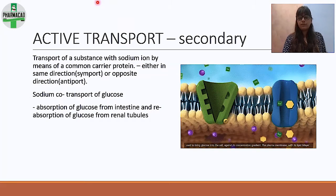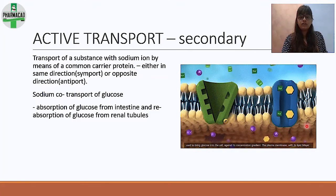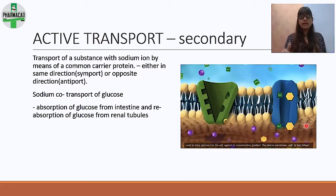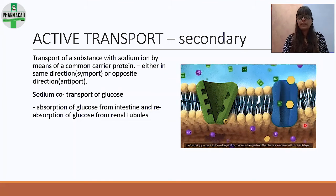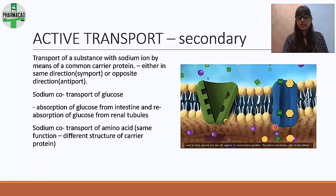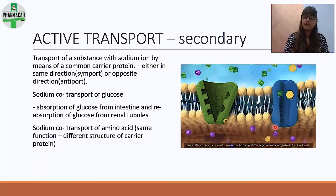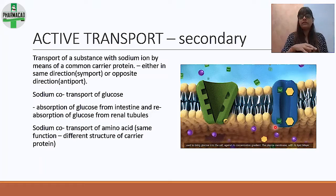An example of secondary active transport is sodium co-transport of glucose. Glucose is absorbed from the intestines and reabsorbed from renal tubules alongside sodium. Similarly, amino acids also form secondary active transport with sodium, both in the intestines and in the renal tubules.